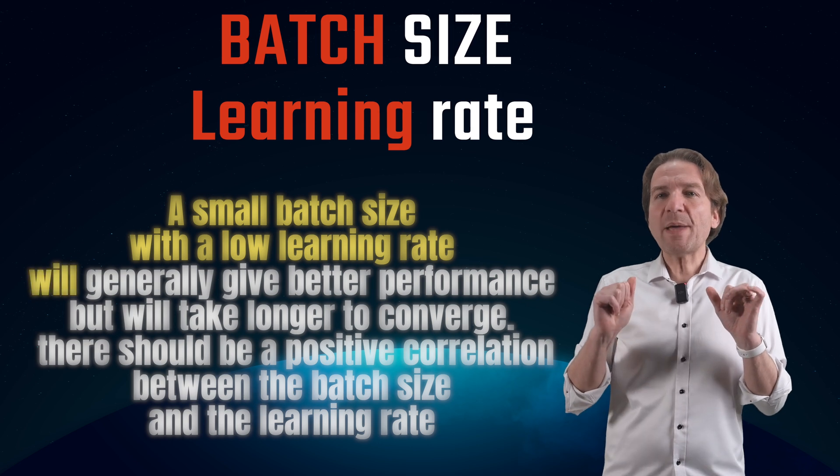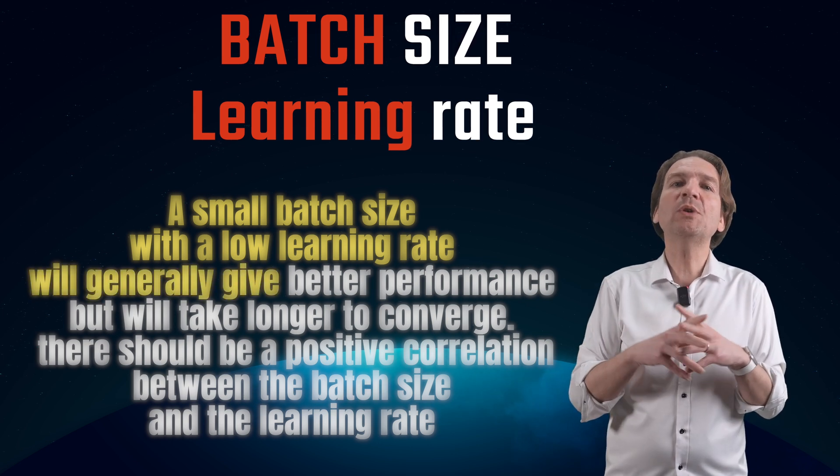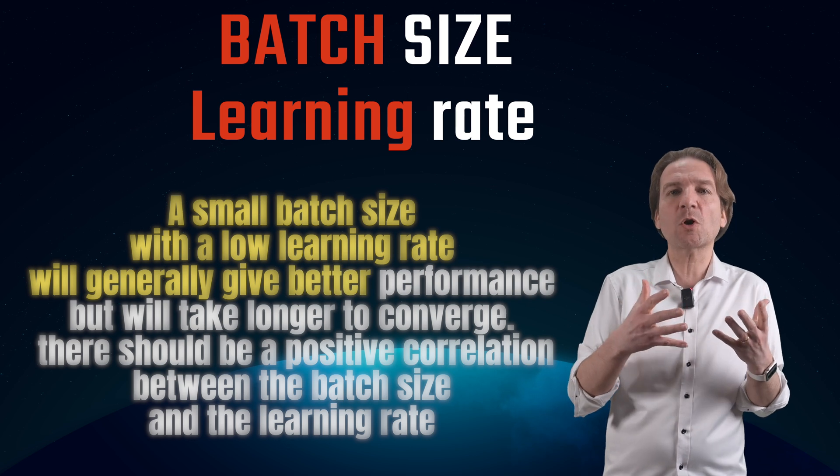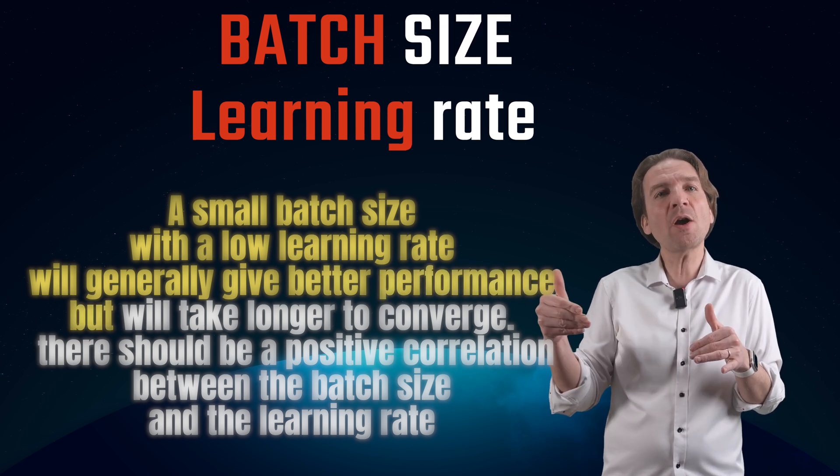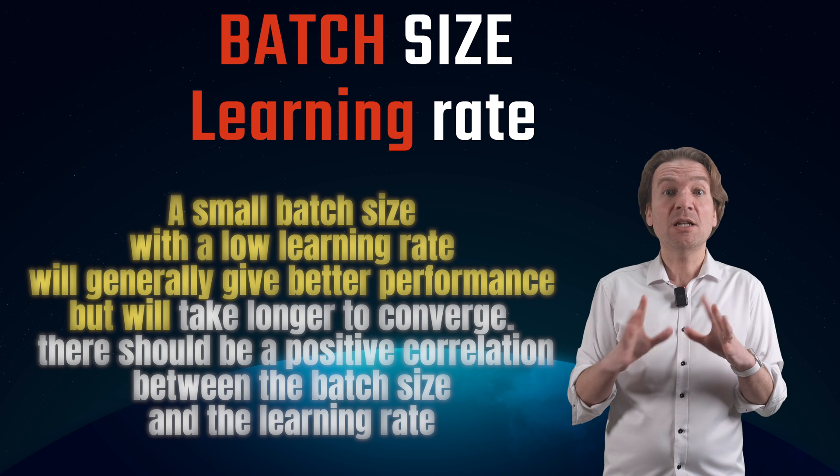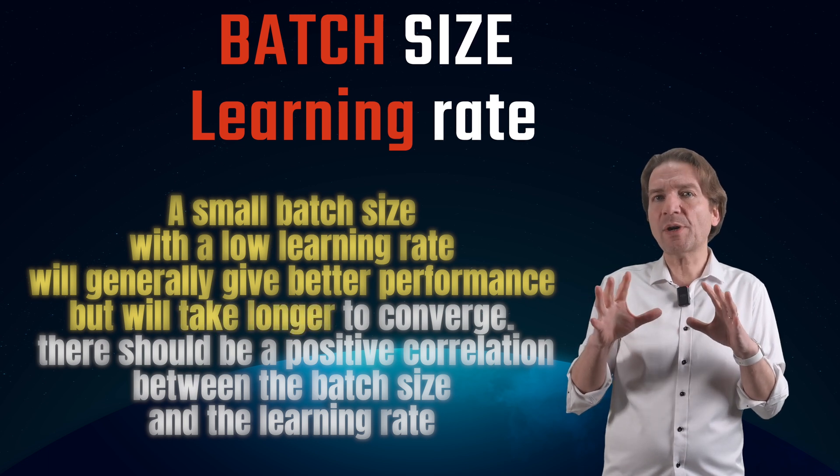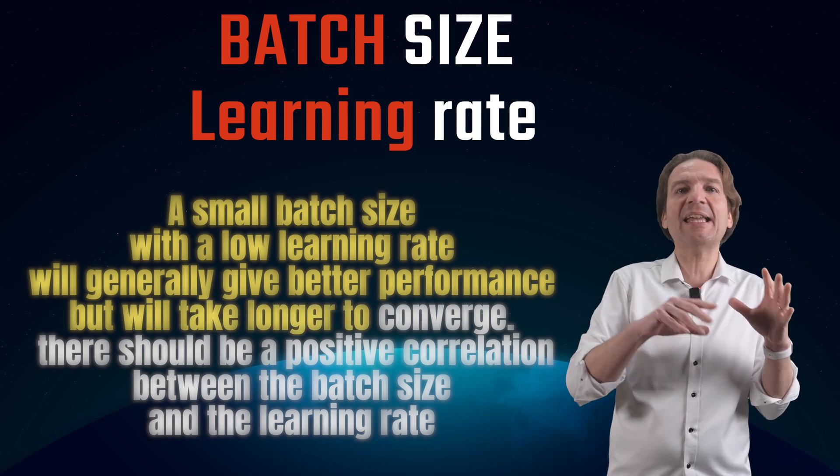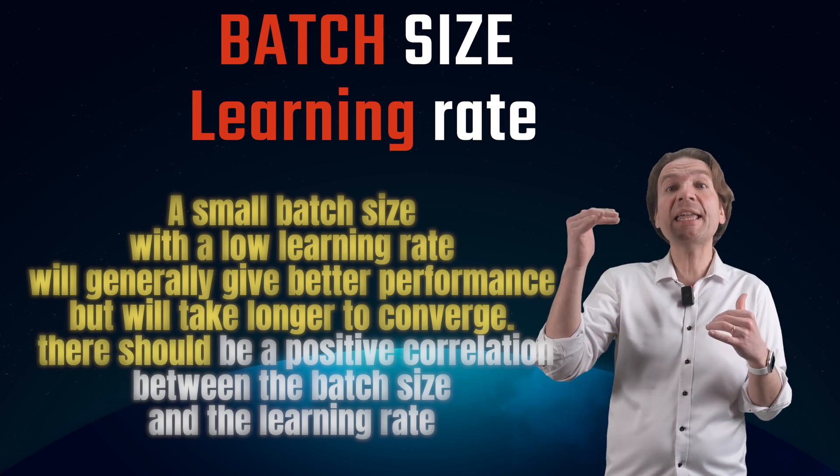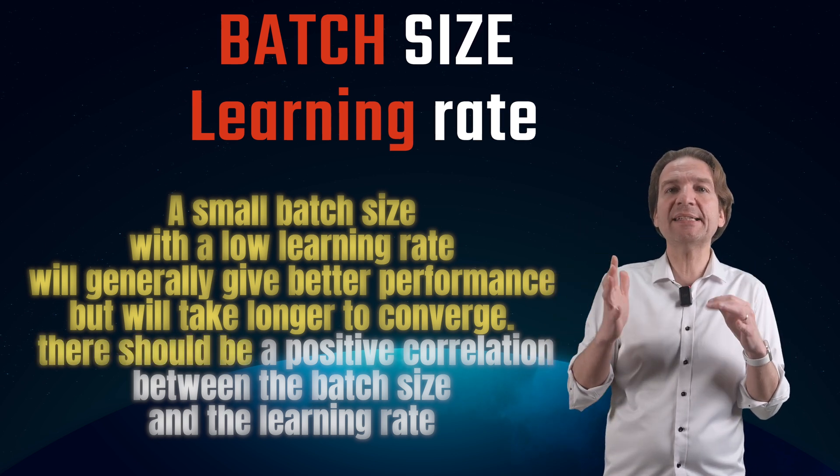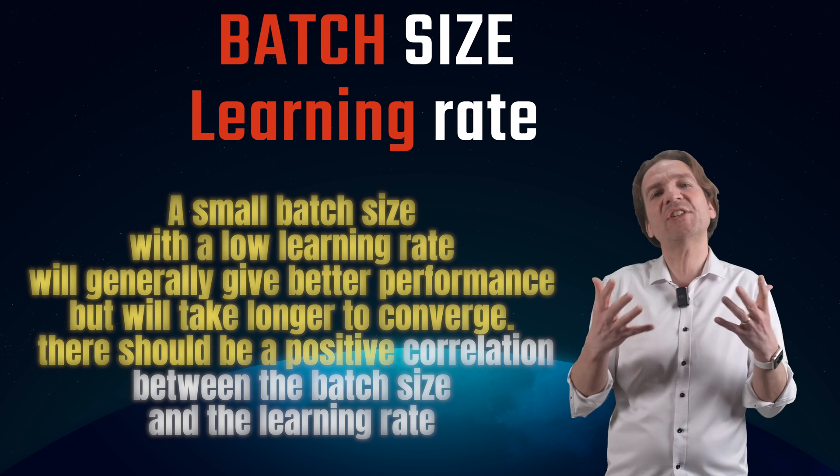A small batch size with a low learning rate will generally give better performances, but will take longer to converge. I mean, there should be a positive correlation between the batch size and the learning rate. When the learning rate is high, larger batch sizes give better results and vice versa.